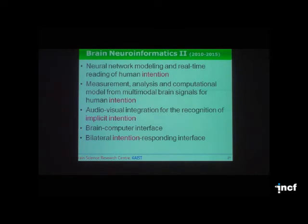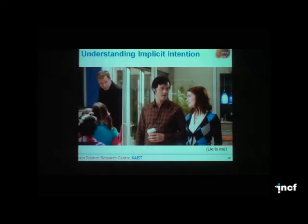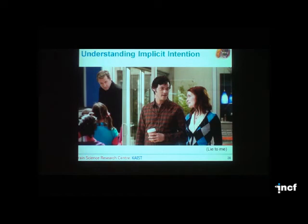The brain neuroinformatics research program enters its second phase from this year — it just started this month. In this new program we emphasize intention: we try to understand human intention. In addition to the intention expressed by people, we are also interested in understanding implicit intention. For a lie detector example, if I say something, that may be different from my actual intention — lying is one example, but there are many other ways to formulate intention.